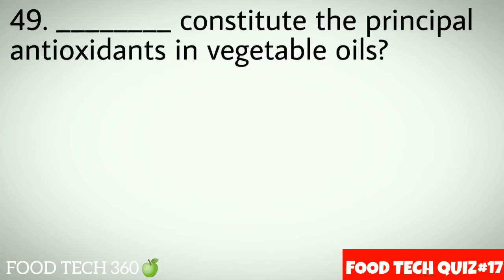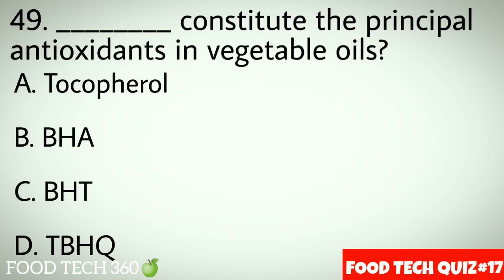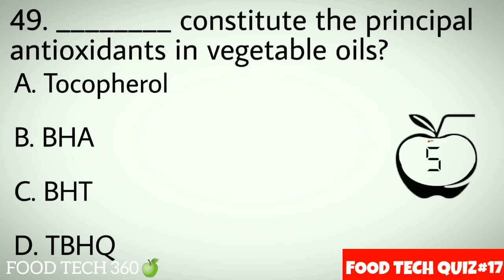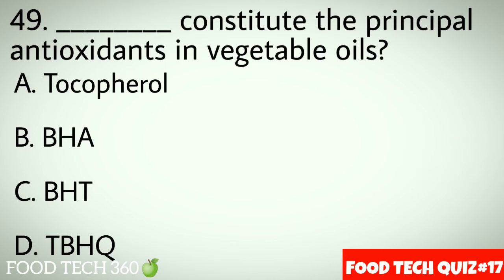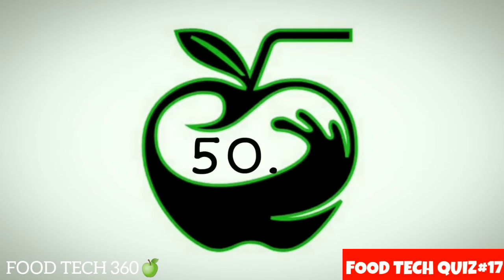Question number 49: Dash constitute the principal antioxidants in vegetable oils. Options: A. Tocopherols, B. BHA, C. BHT, D. TBHQ. Correct answer: A. Tocopherols.